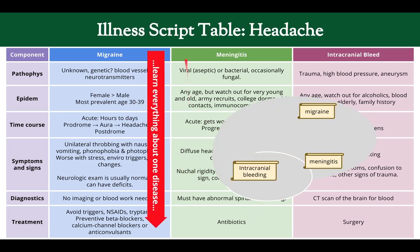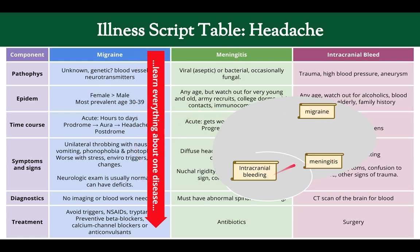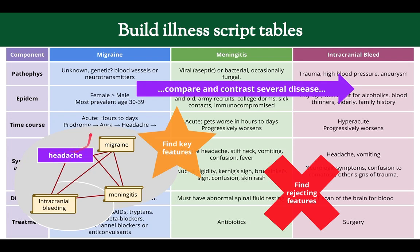Illness script tables allow you to do a couple of things. If you store information in illness scripts in isolation, you have a bunch of disconnected illness scripts in your brain that don't really help when someone comes in complaining of a headache. But if you create an illness script table and compare and contrast across several diseases, you can see what's different and what's the same between each one. You can find the key features and the rejecting features, connect the illness scripts in your head, and connect them to a complaint.